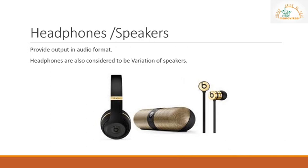Headphones or speakers give out the output in audio format — they give out sound signals. Headphones are small speakers that can be worn in or around your ears. Traditional headphones have two ear cups attached by a band that is placed over your head. Smaller headphones, often called earbuds or earphones, are placed inside the outer part of your ear canal.